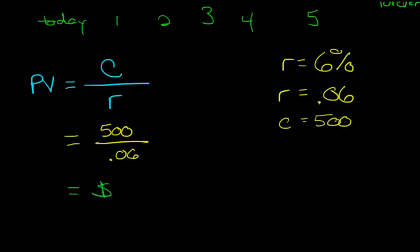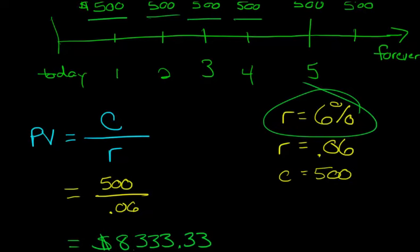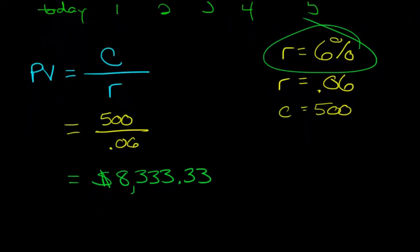So what does that mean? Well, that means if somebody were to offer you $500 payments every year, just for infinity, I will give you $500 at the end of the year every year, and your discount rate is 6%, and you're trying to say, well, what is the present value of this stream of $500 payments I'm going to be receiving forever? What is the value, what's the present value of that, given this rate? Well, that's $8,333.33.